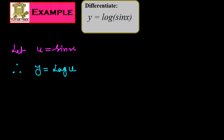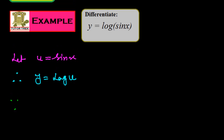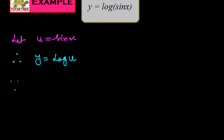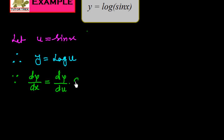Now we differentiate this. As per the rule, dy over dx is equal to dy over du into du over dx. I explain why it is so: if we eliminate du, the du terms cancel each other, and we get again dy over dx. In this way we could solve this problem.